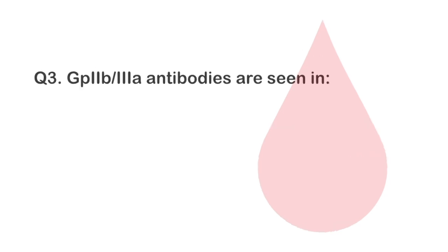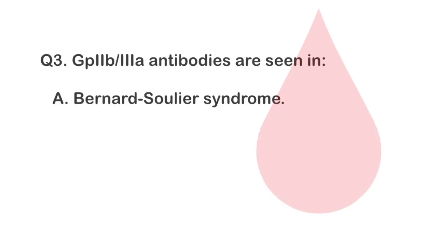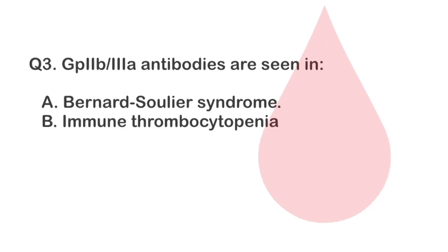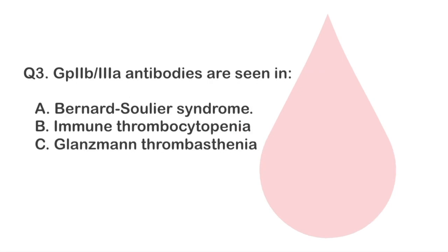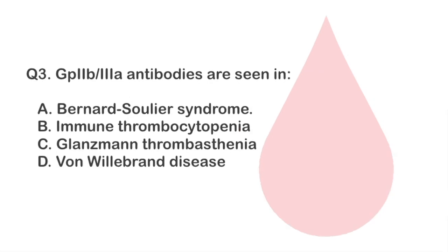Question 3. GP2B3A antibodies are seen in Option A, Bernard-Soulier syndrome. Option B, Immune thrombocytopenia. Option C, Glanzmann thrombasthenia. Option D, Von Willebrand disease.